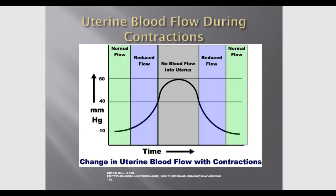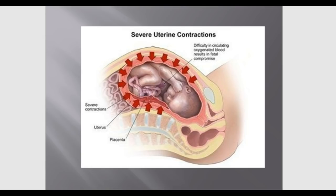It's important to assess how the baby is tolerating labor. During severe contractions there can be decreased blood flow, and if the baby is not tolerating labor well, you can have fetal compromise. The baby may need to be delivered another way, such as a C-section, if it is not tolerating labor well.